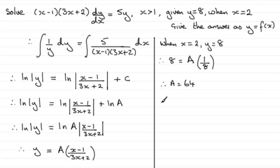So I can finish now by saying that therefore y = 64(x-1)/(3x+2). That's y given as a function of x.